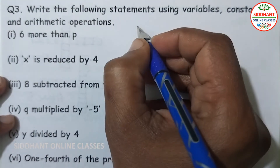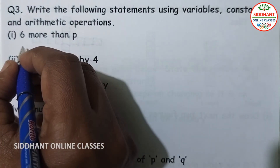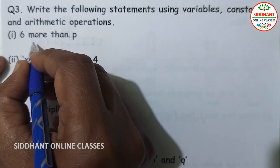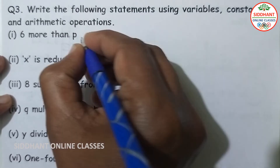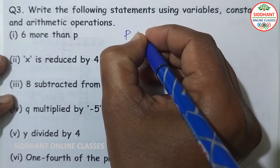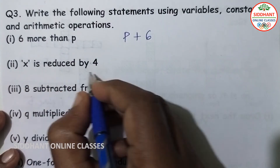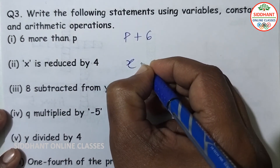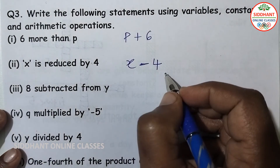Question number 3: write the following statements using variables, constants, and arithmetic operations. First, '6 more than p' — p is the variable, and we add 6, so the expression is p plus 6. Second, 'x is reduced by 4' — x minus 4 is the expression. Third, '8 subtracted from y' — the expression is y minus 8.